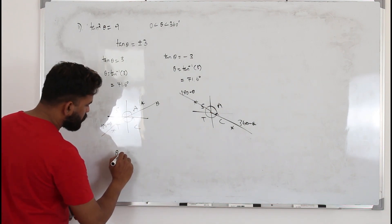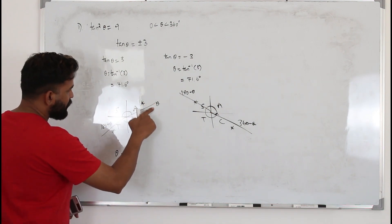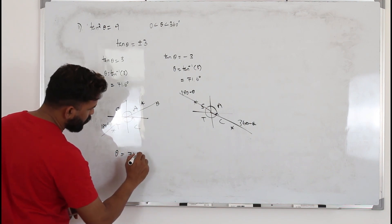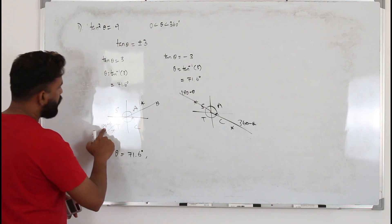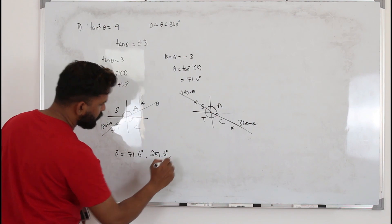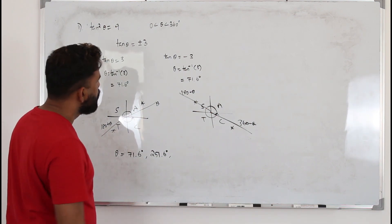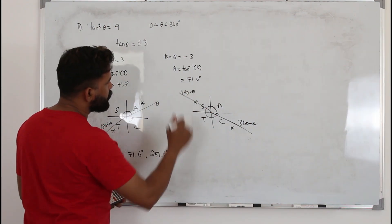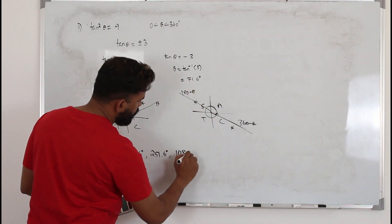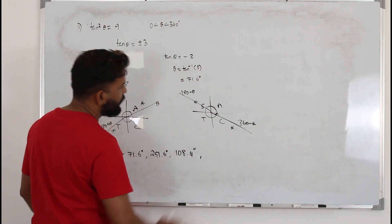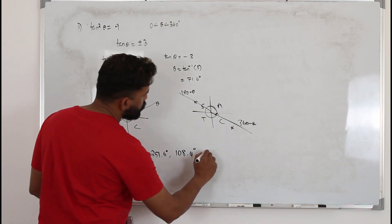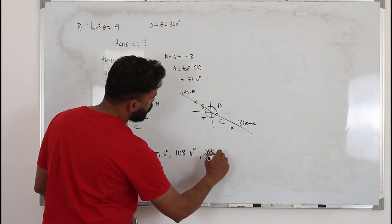The final solutions are: θ (the principal value) = 71.6°, 180 + 71.6° = 251.6°, 180 − 71.6° = 108.4°, and 360 − 71.6° = 288.4°.